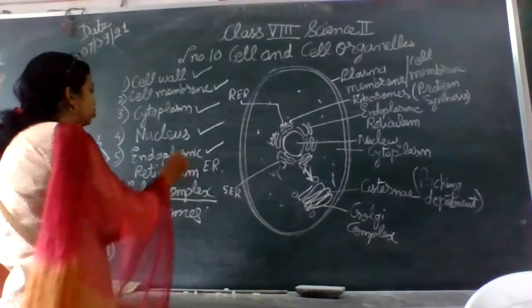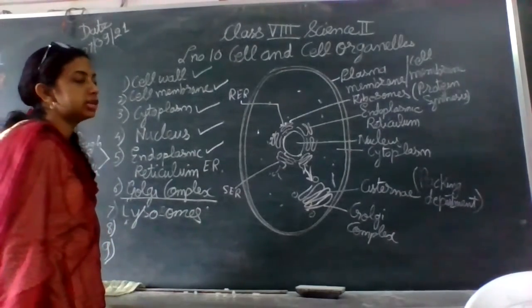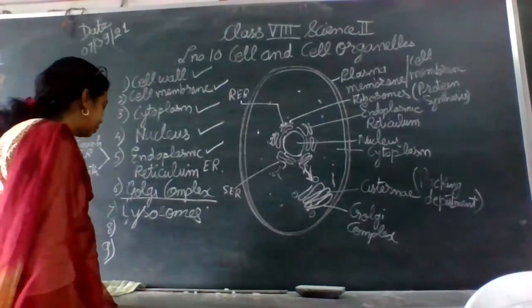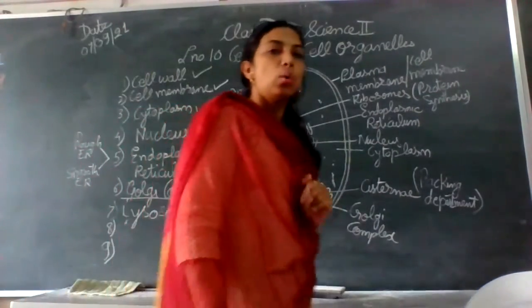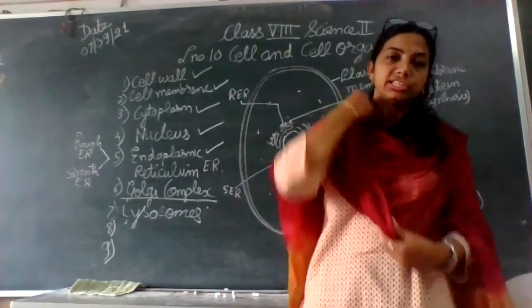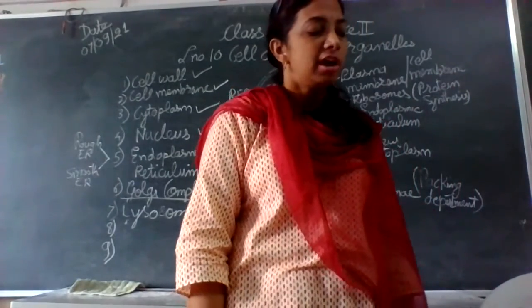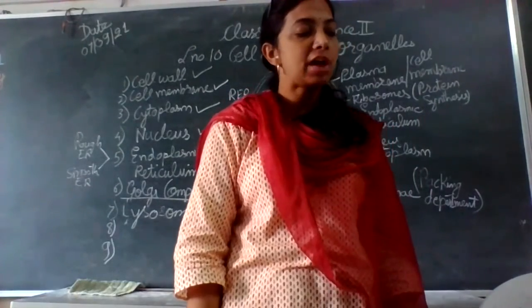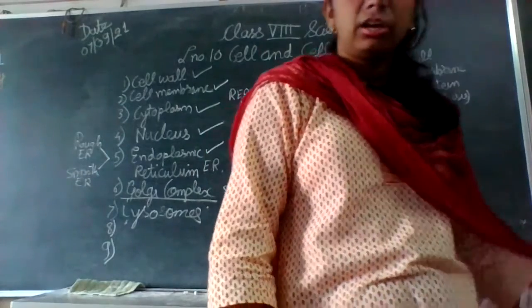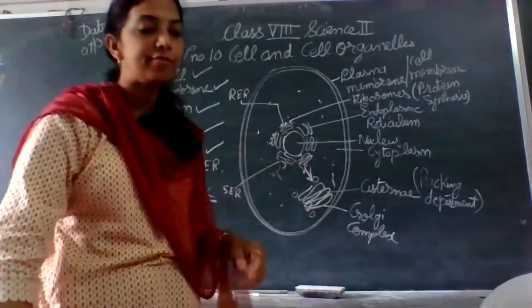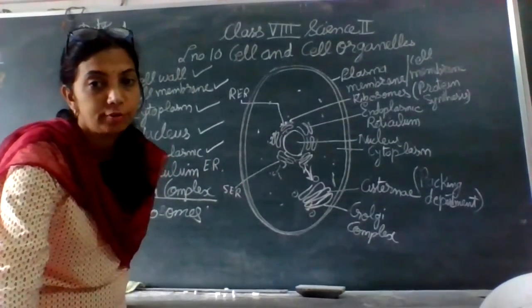Today we have covered endoplasmic reticulum and Golgi complex, and understood how they work inside the cell in combination. We also covered the two types of endoplasmic reticulum: rough and smooth. I hope you can write down the difference between rough and smooth endoplasmic reticulum and the functions of endoplasmic reticulum and Golgi complex for the day. Next cell organelle in the next class. Bye, thank you!